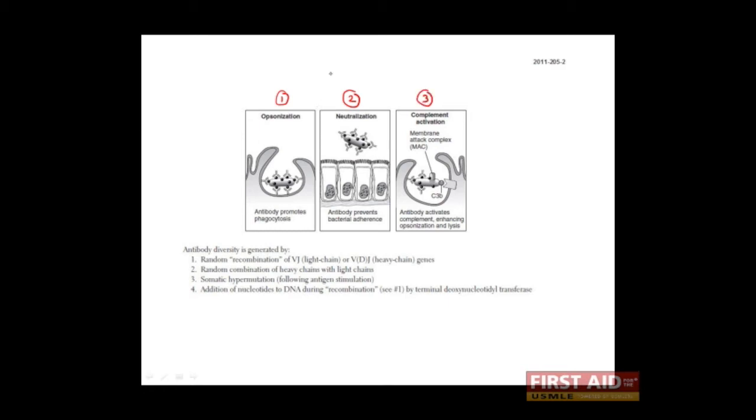When antibodies coat a pathogen, the pathogen becomes more visible to phagocytes, like macrophages, neutrophils, or dendritic cells. This process of antibody coating to promote phagocytosis is known as opsonization.